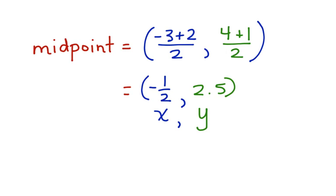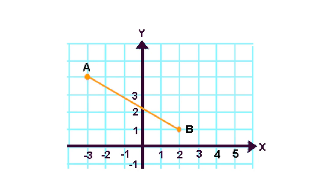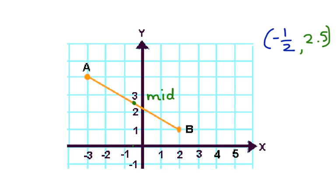Let's go back to our graph and graph this midpoint. Remember the coordinates of the midpoint were negative 1 half and 2.5. So starting with negative 1 half, we go negative 1 half, we go up 2.5, and we put a point. And this is the location of the midpoint.